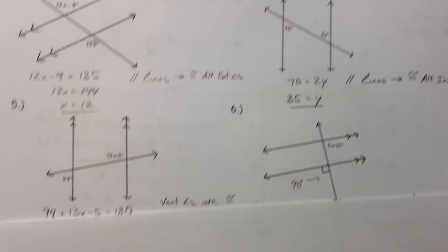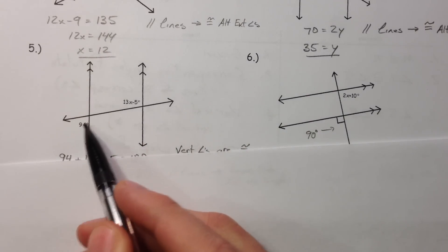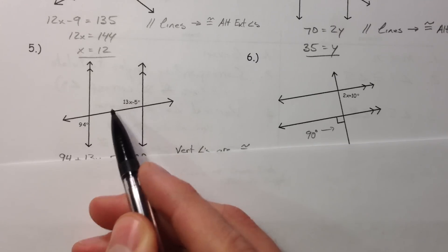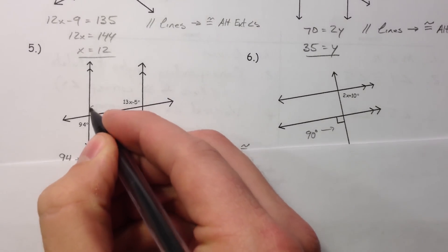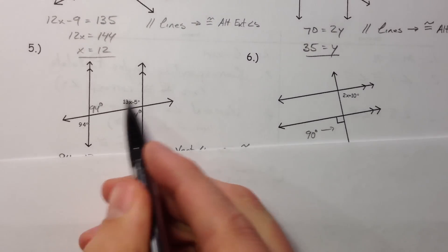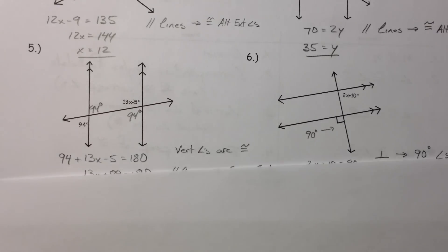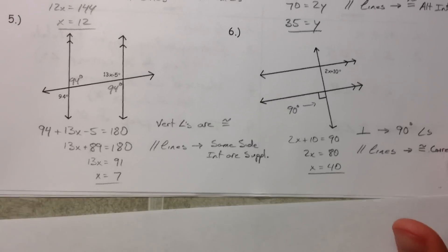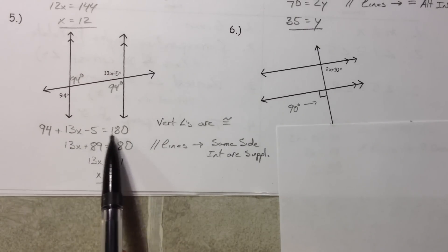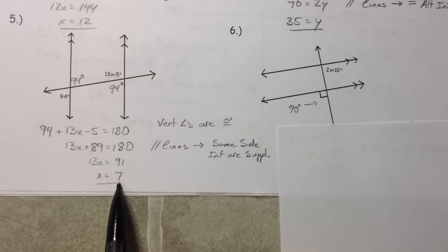Next we've got 94 and 13X minus 5. It's tempting to say these are alternating and congruent, but they're not — one is on the inside and one is on the outside. So 94 can be related through vertical angles and then same side interior angles, making them supplementary. Add them up, set it equal to 180. Combine like terms, subtract 89, divide by 13, and you get there.